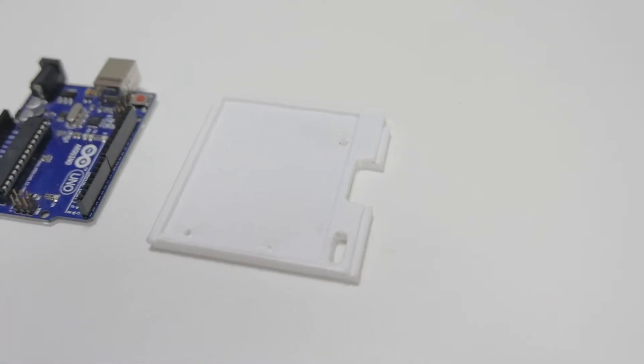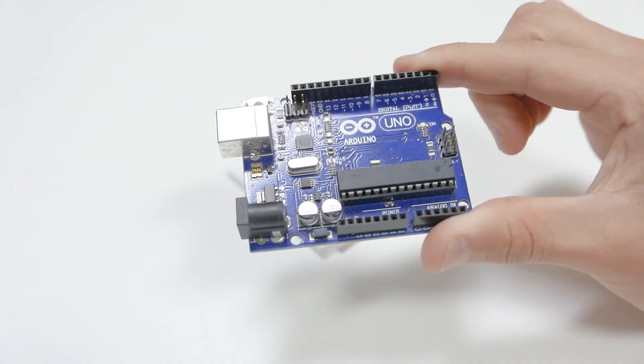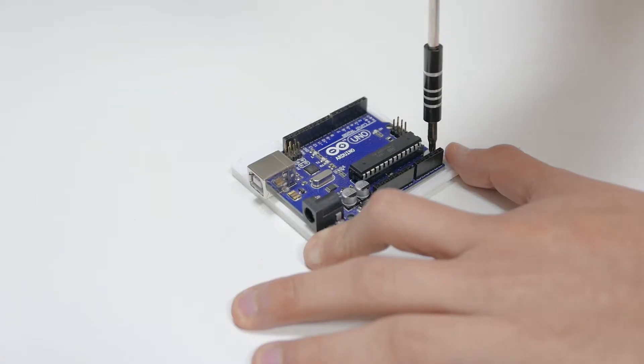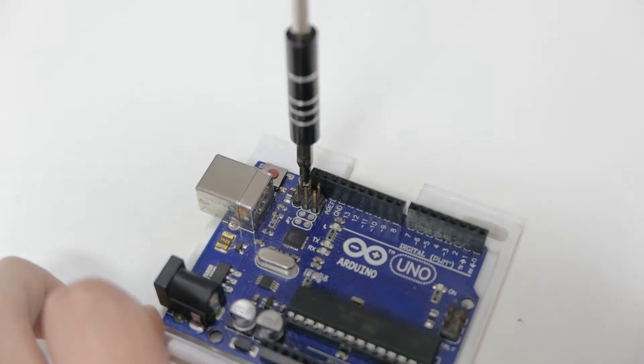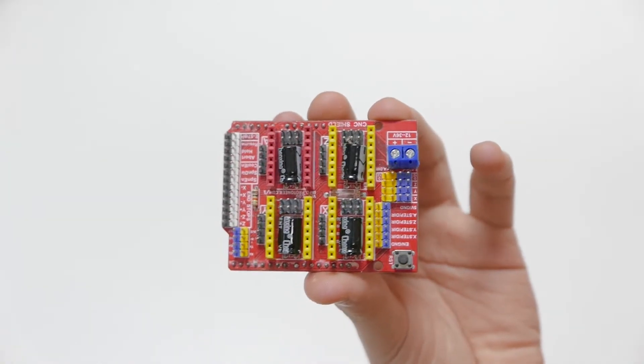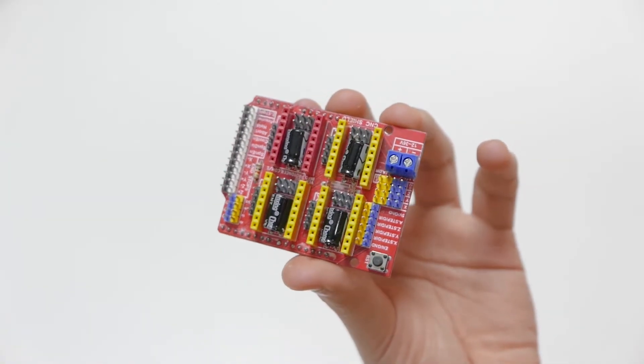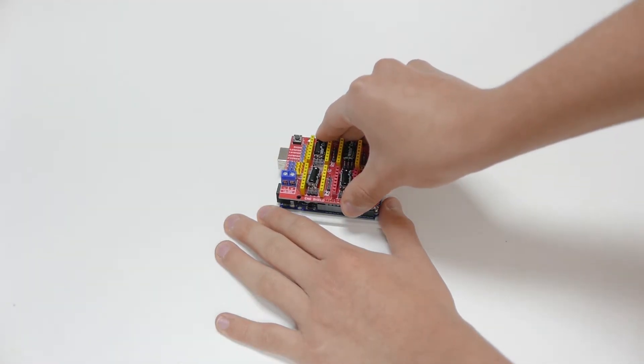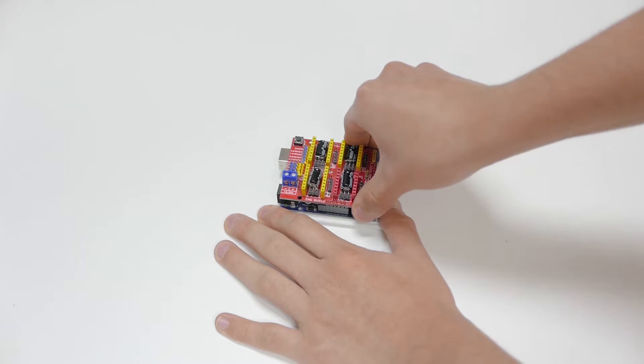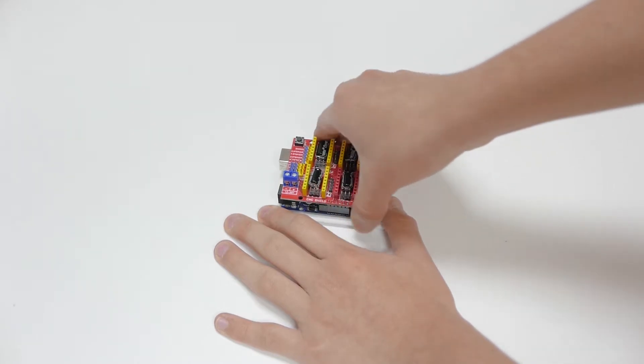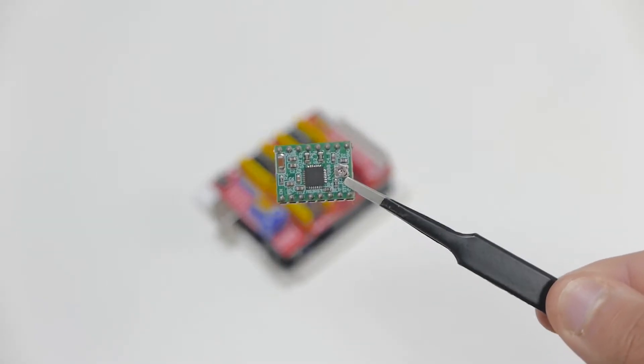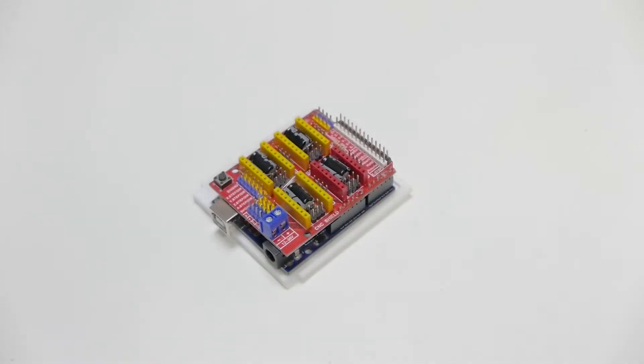Now I am going to use this platform that I printed for Arduino Uno. I place the Arduino and screw it to the platform with some screws from the DVD player. This is an Arduino CNC shield that we can control up to three stepper motors independently. And we are going to insert it into the Arduino. And what you are looking at is an A4988 stepper motor driver. We are going to insert two of these into the top of the shield.